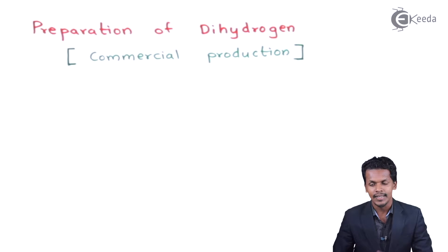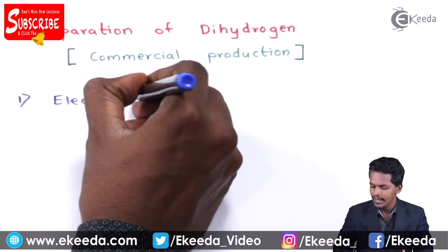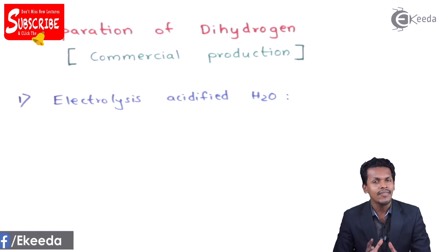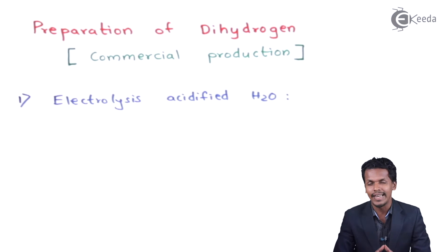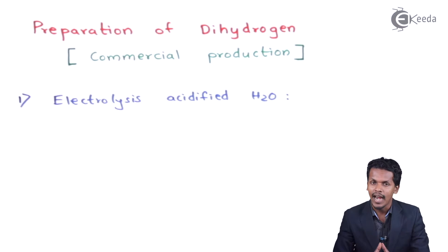The first method is the electrolytic method — specifically, electrolysis of acidified water. When H₂SO₄ is dissolved in H₂O, the water turns acidic. If this acidified water undergoes electrolysis using two platinum electrodes — one acting as an anode and the other as a cathode — a redox reaction occurs, and we can obtain hydrogen gas along with oxygen gas.